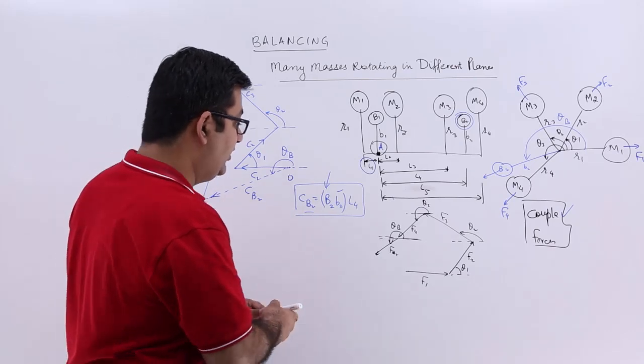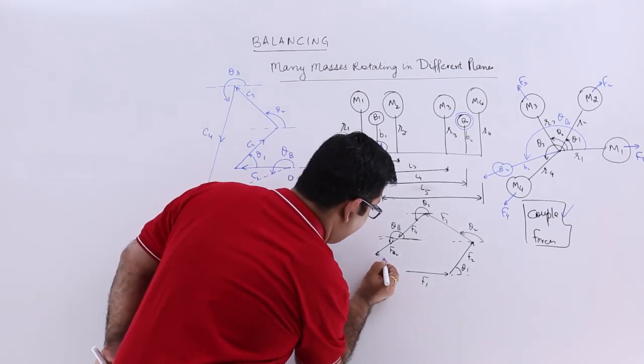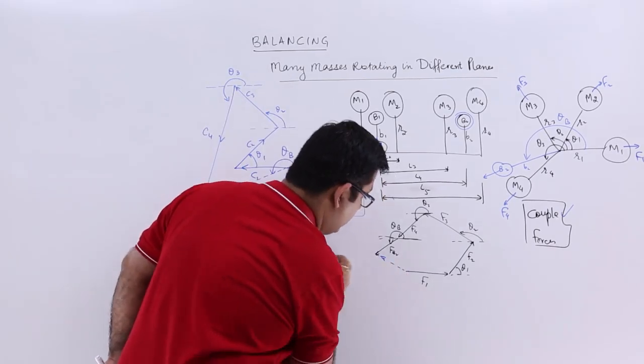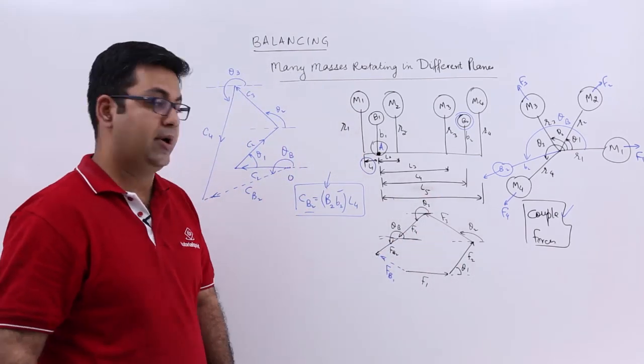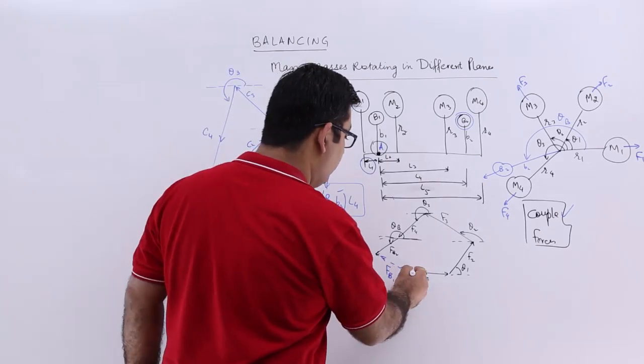So the vector which is closing this force polygon would become FB1. And the orientation would be this.